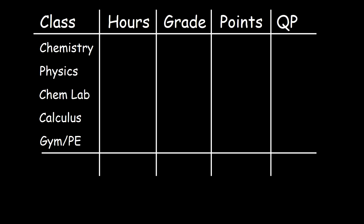So how do you go about calculating your GPA in college? Let's say if you got a B in chemistry, a D in physics, a C in your chemistry lab, an A in calculus, and an A in a PE class. What is your GPA for this semester?